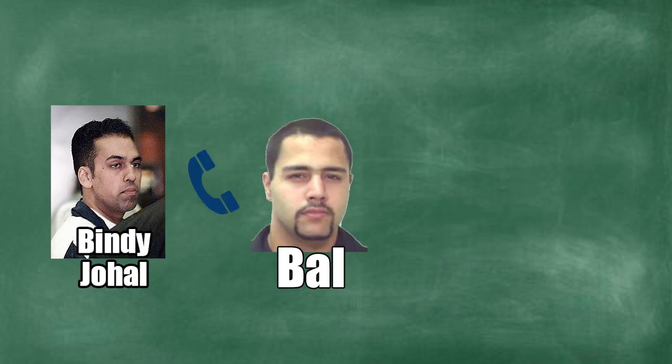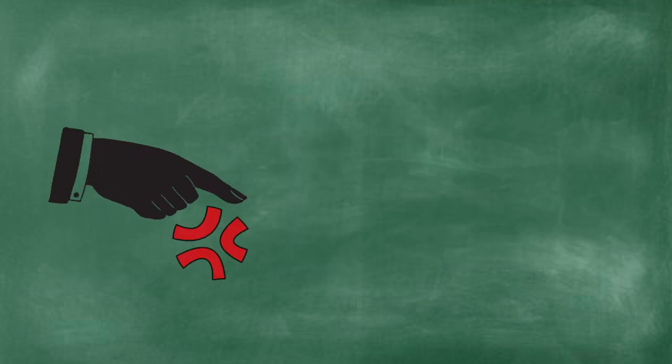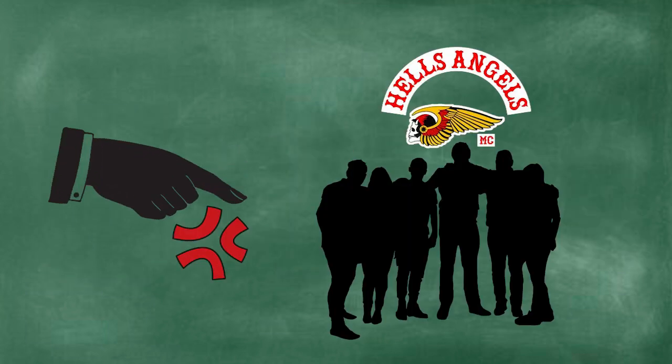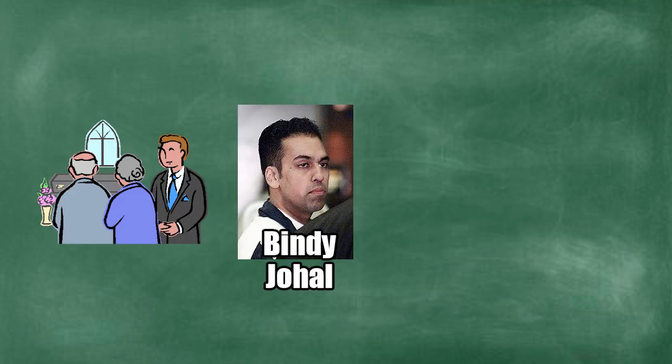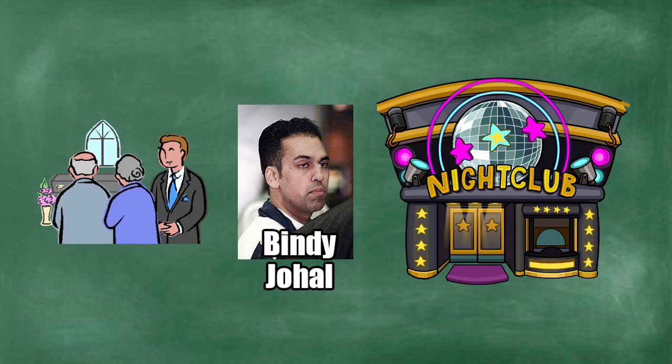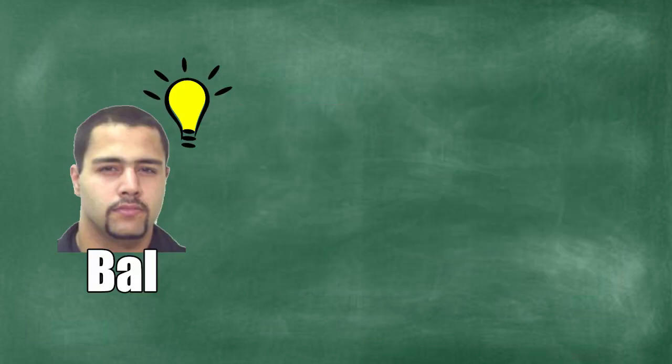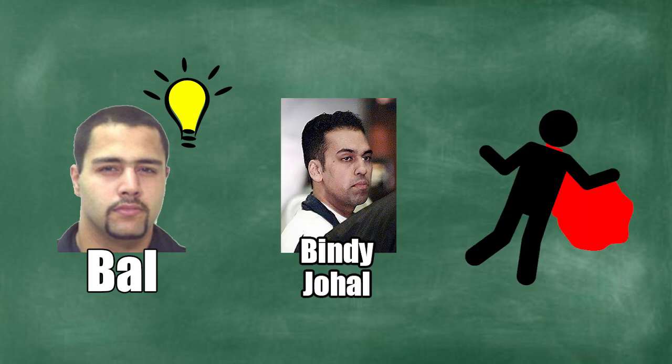Johal called Bal and suggested they attend the funeral and blame it on the Hell's Angels. Suspiciously, right after the burial, Johal suggested they go clubbing. It was at this point that Bal was convinced it was Johal who murdered their associate, Roman Man.